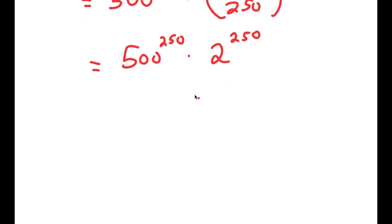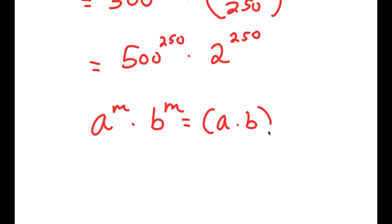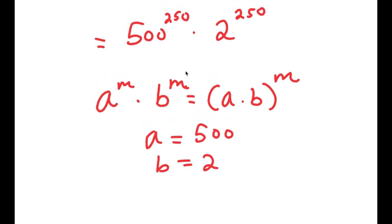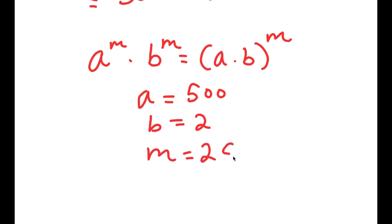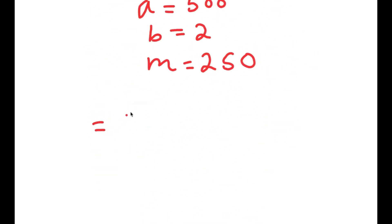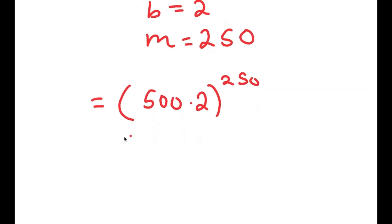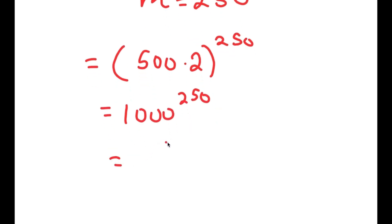If I have something in the form a to the power of m times b to the power of m, this equals a times b to the power of m. So here, a is 500, b is 2, and m is 250, giving me 500 times 2 to the power of 250, which equals 1,000 to the power of 250. And this is the same thing as 10 to the power of 750.